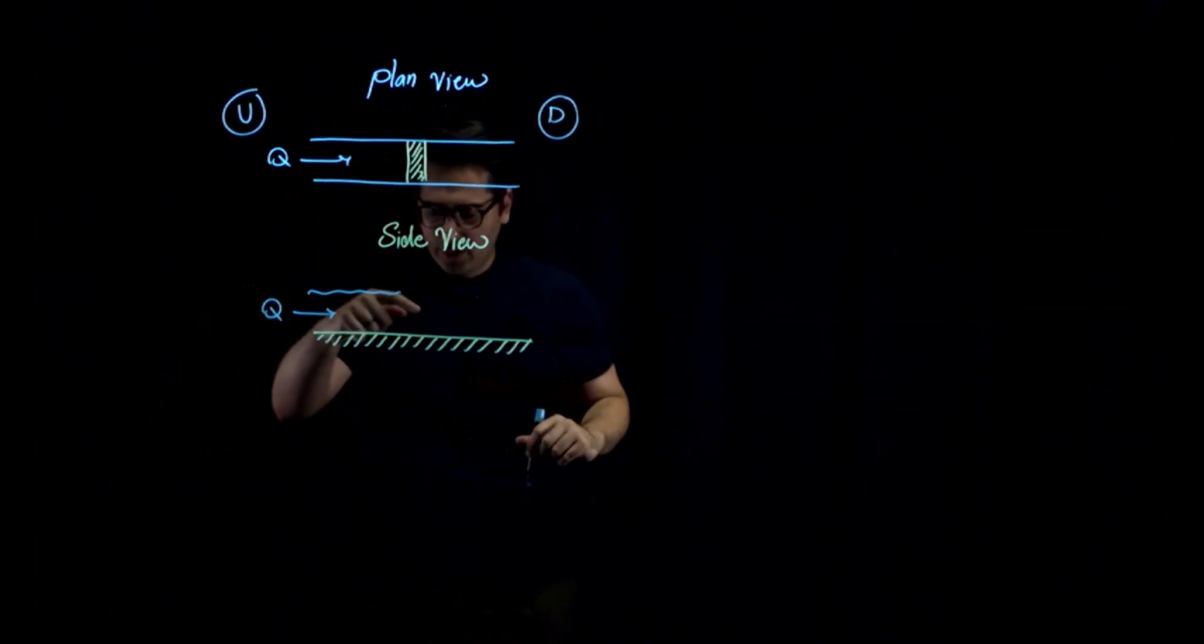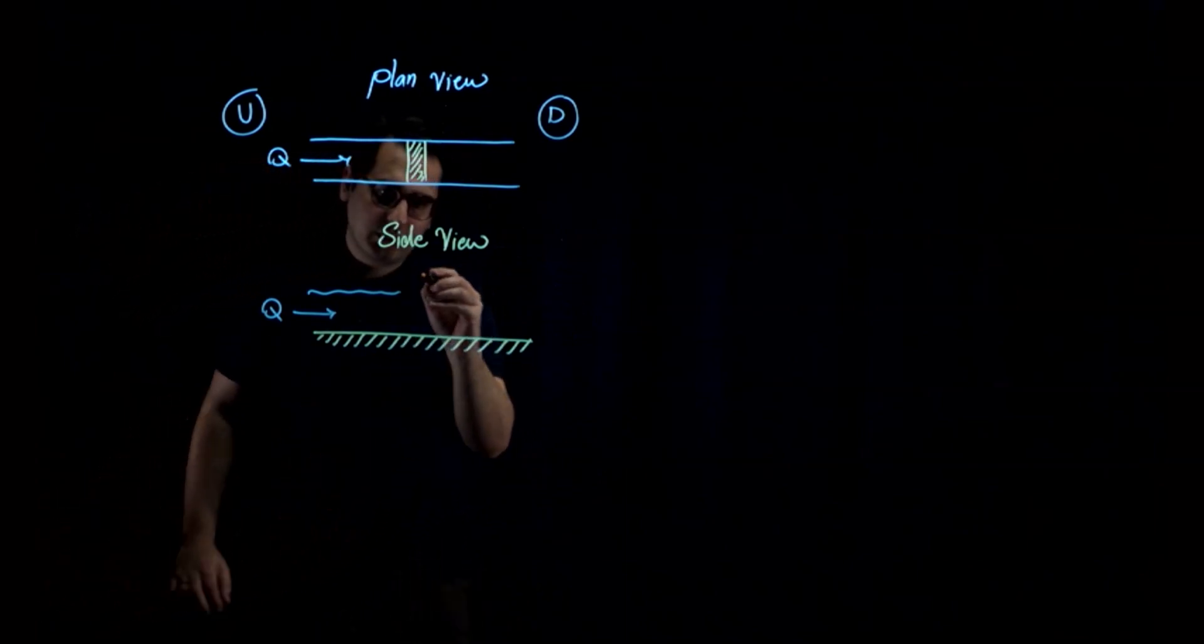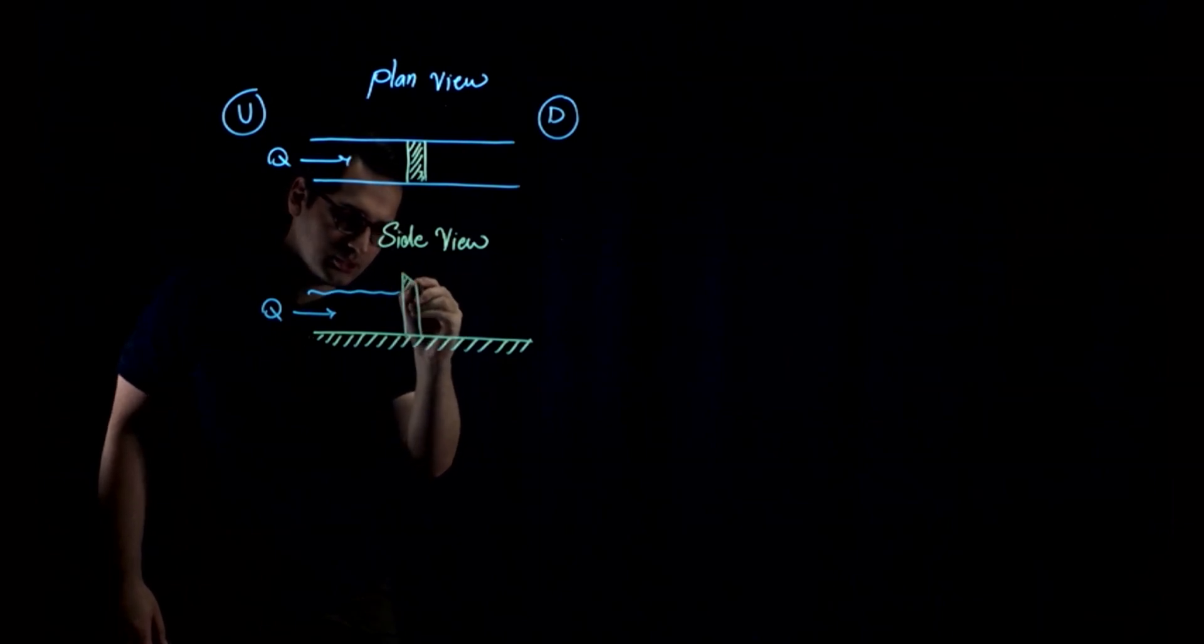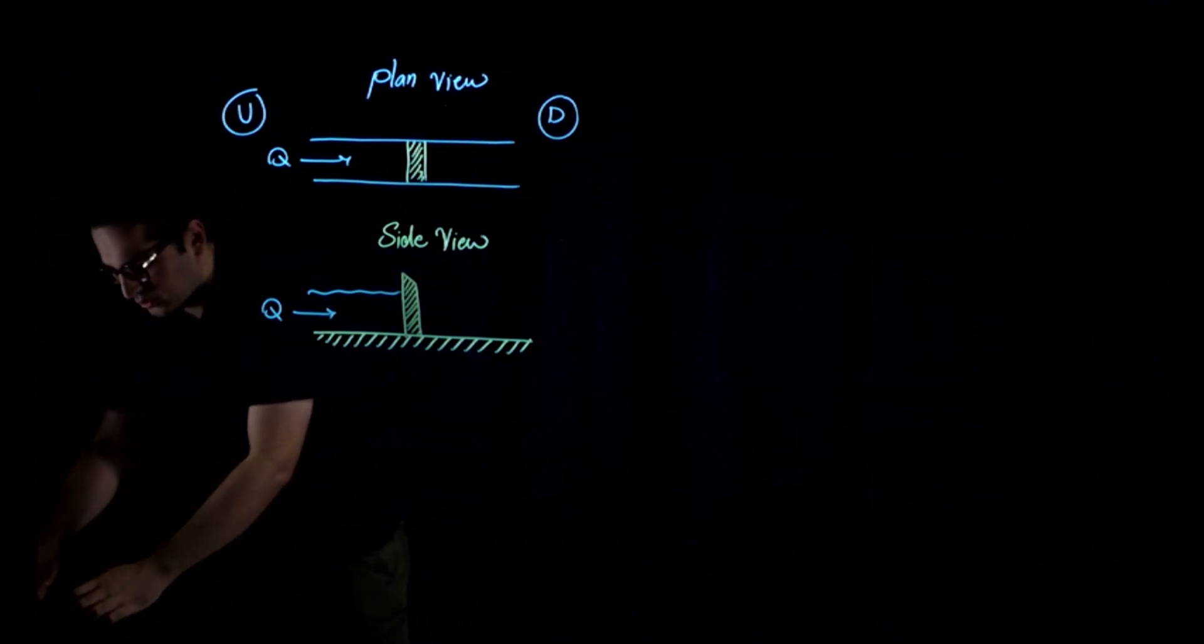So this is water moving in this direction, and then you install a weir, let's say, right over here. And this is a weir, a wall-like structure. What happens when you do that?